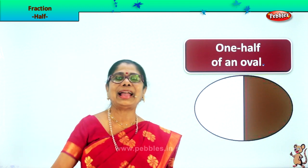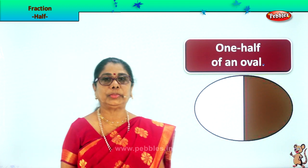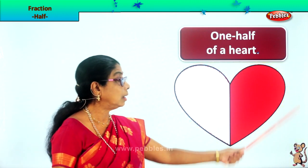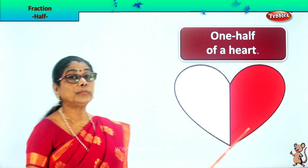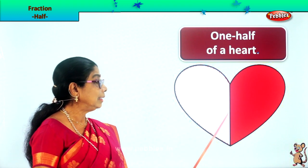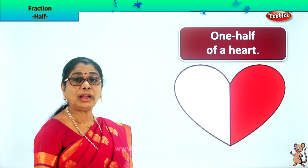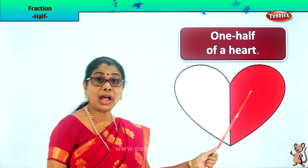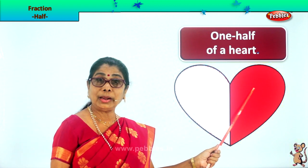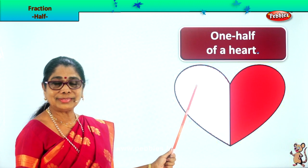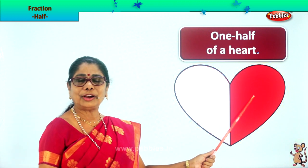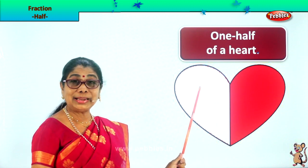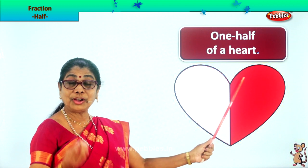Let's take another shape. Here we have a heart. The whole heart shape I have divided equally into two equal halves. This is one half of the heart shape. One half, one by two — one half of the heart, one half of the heart shape. Now you understand what is one half of a heart shape.